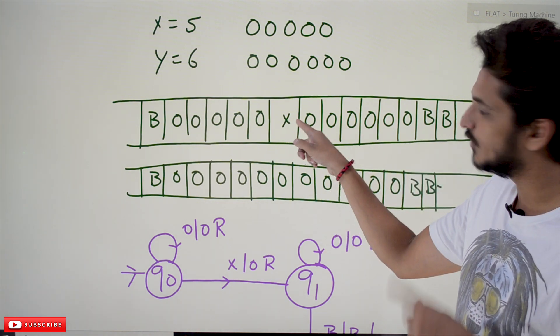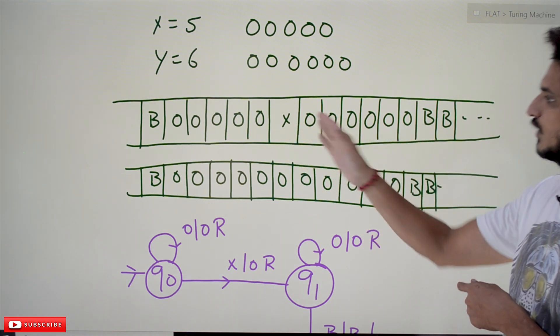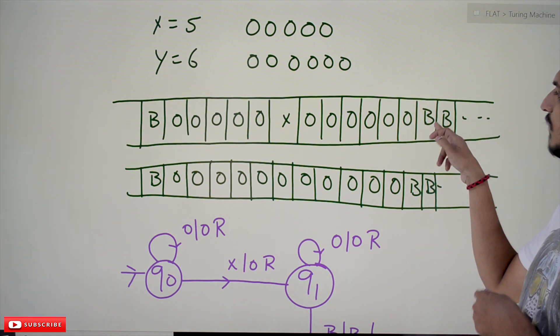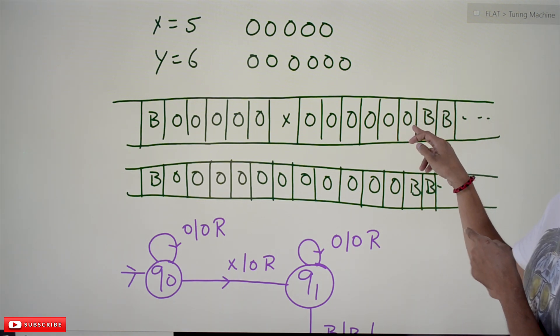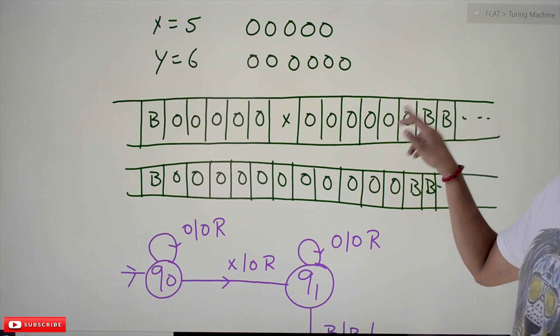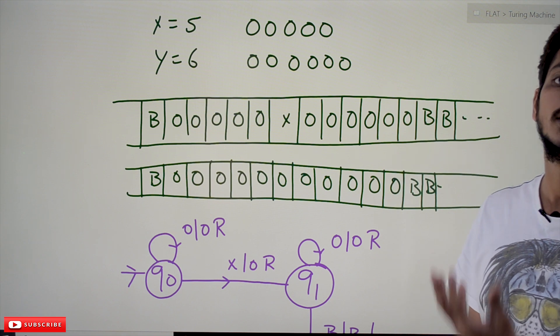That's why we need to make it blank. So we move forward until you find blank. Whenever you find blank, move left. The last 0 should be converted into blank.